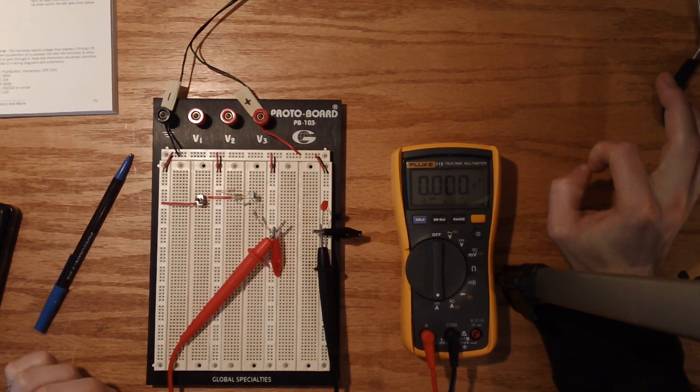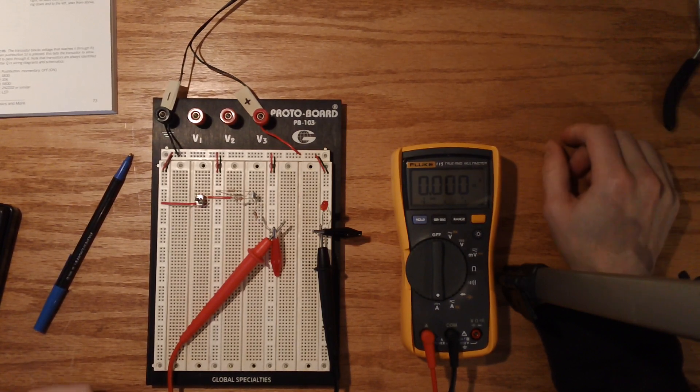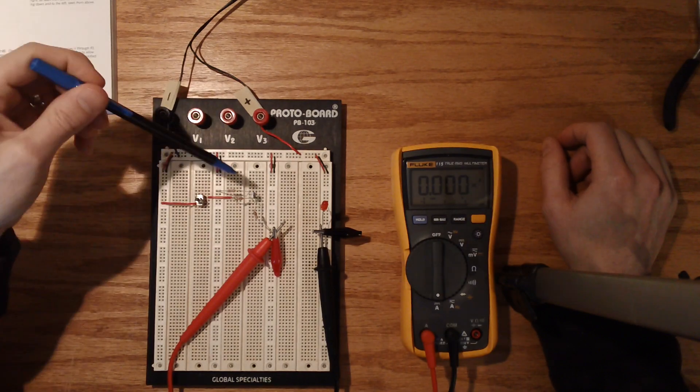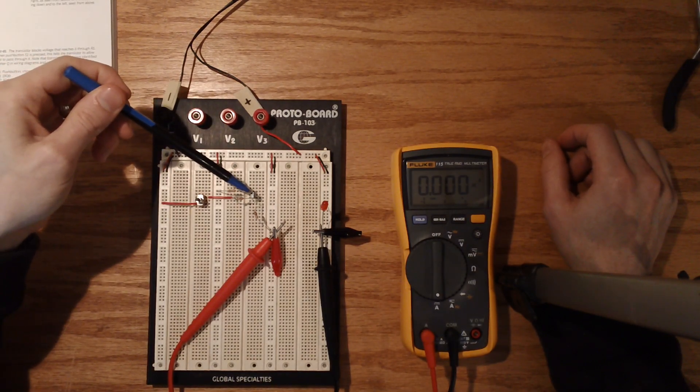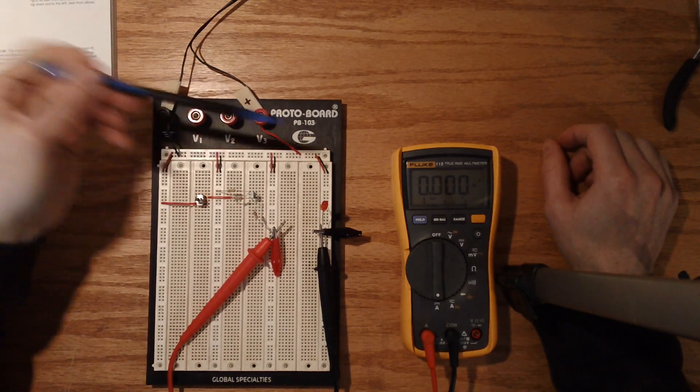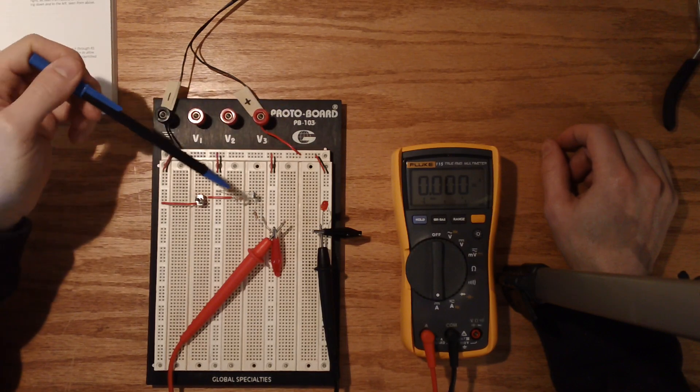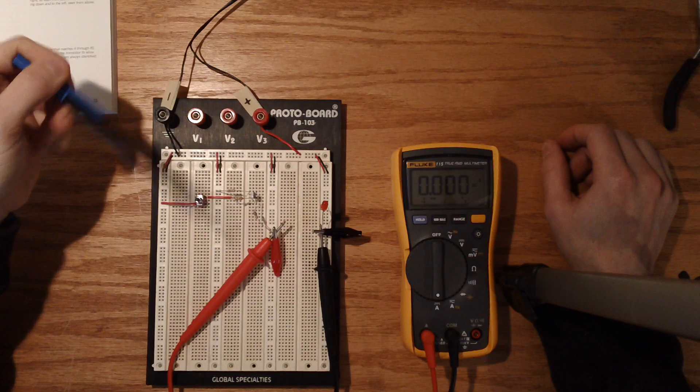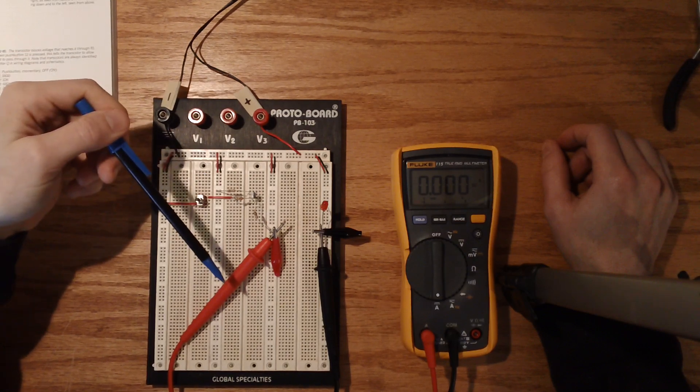So this Experiment 10 is all about transistor switching, and the idea here, without going into too much depth, is a transistor, such as this guy, with his flat face pointing that way, has three pins coming out. We have a collector pin up top, a base pin in the middle, and an emitter pin down below.